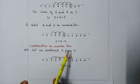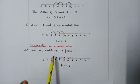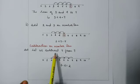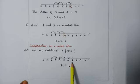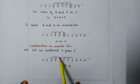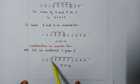Subtraction on the number line. Let us learn to subtract two numbers on the number line. Subtract 5 from 7. The greater number is 7, so we start from 7. We are going to move 5 steps towards the left hand side because we are subtracting. So from 7, moving 5 steps to the left: 1, 2, 3, 4, 5. Our answer is 2. That is 7 minus 5 equals 2.